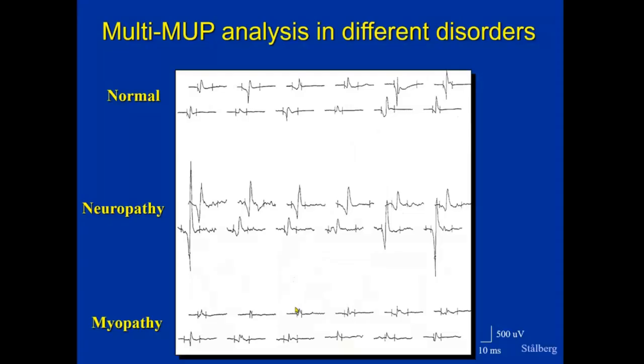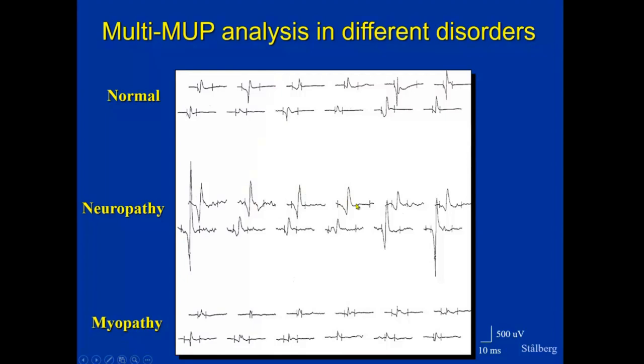Here is a typical small section of recordings from a normal, a very slight neurogenic situation with a slight increase in amplitude, and smallness of the myopathic motor unit potentials. The other thing we look at is the instability of the motor unit shape. We trigger on the signal and superimpose 10 discharges. This is seen on the top trace from a normal muscle and from a patient with ALS where we have great variation in shape due to unstable neuromuscular transmission in the re-innervating motor unit. This we call JIGGLE.